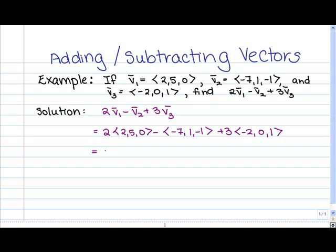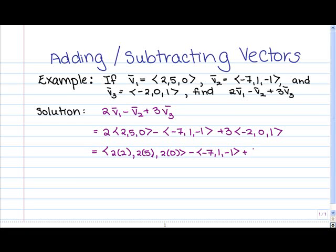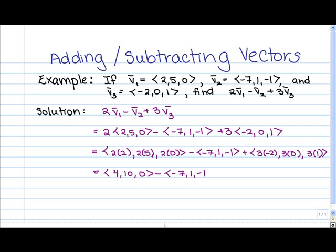Let's go ahead and do that scalar multiplication first. We have 2 times 2 as the first component, 2 times 5 as the second component, and 2 times 0 as the third component of the first vector. For the second vector, we don't have to multiply by a scalar, so we leave it as is. For the last vector, 3 gets multiplied by each component. This gives us (4, 10, 0) minus (-7, 1, -1) plus (-6, 0, 3).